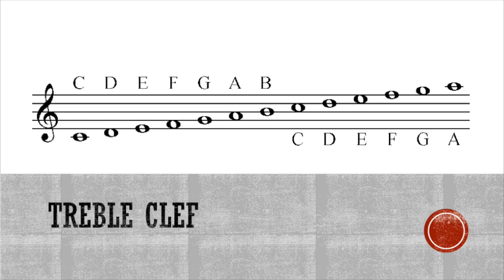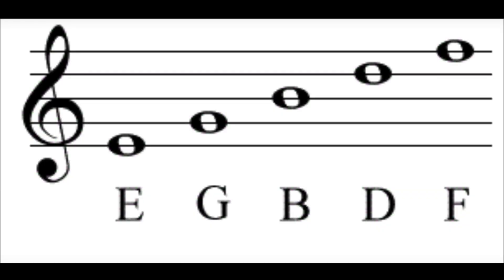In our treble clef we have lines and spaces which make an alphabetical format, so you'll see C D E F G A B C D E F G A. We're going to start off with the notes in the treble clef.